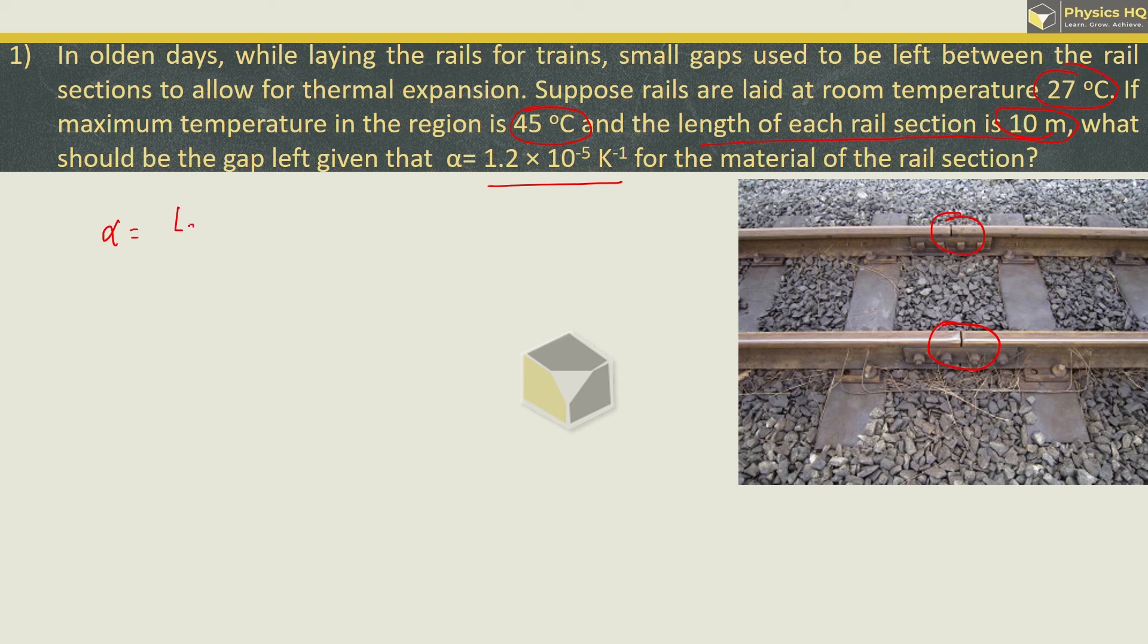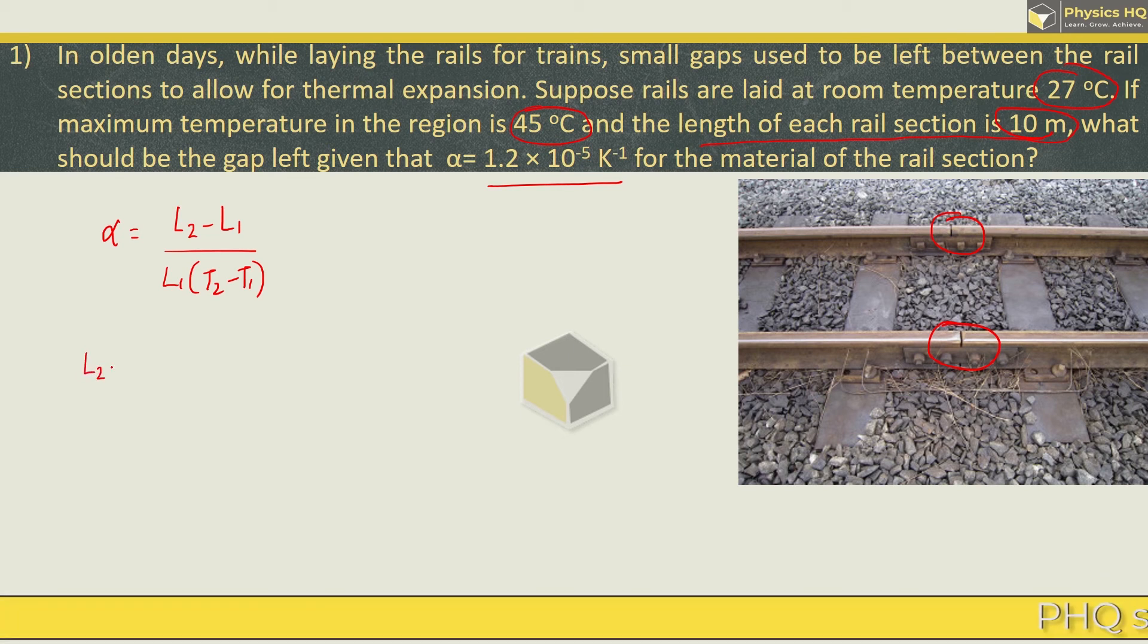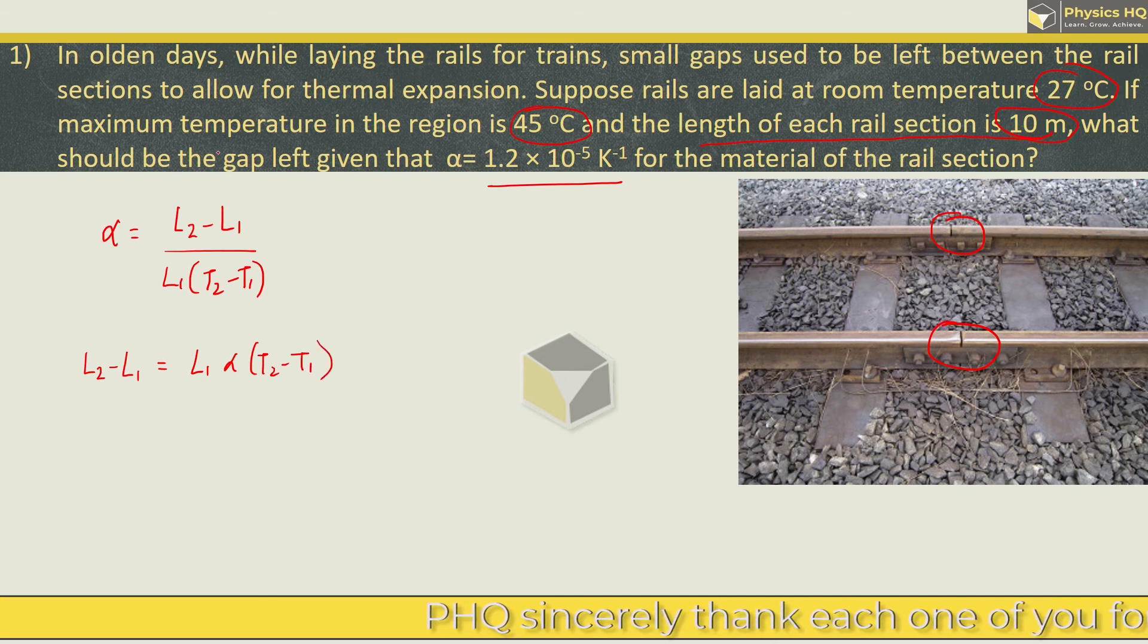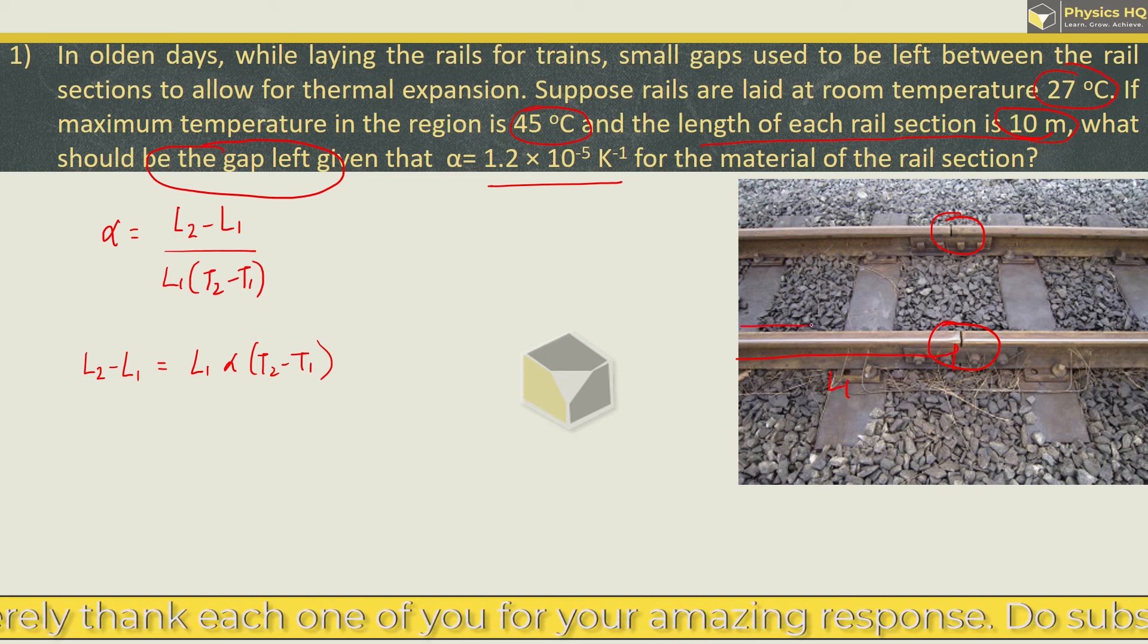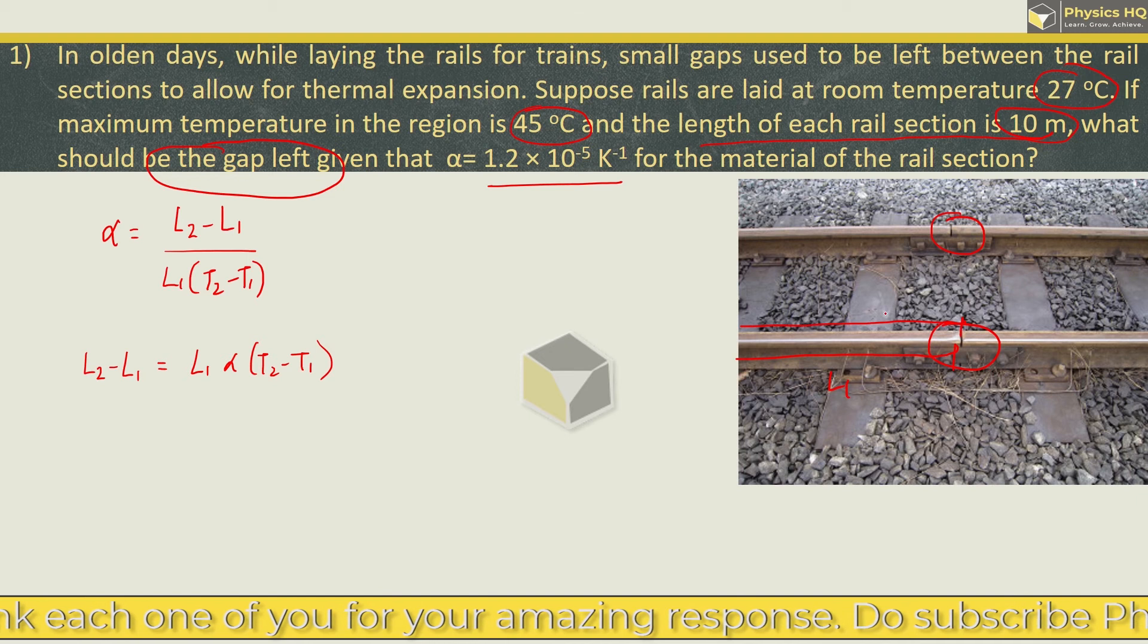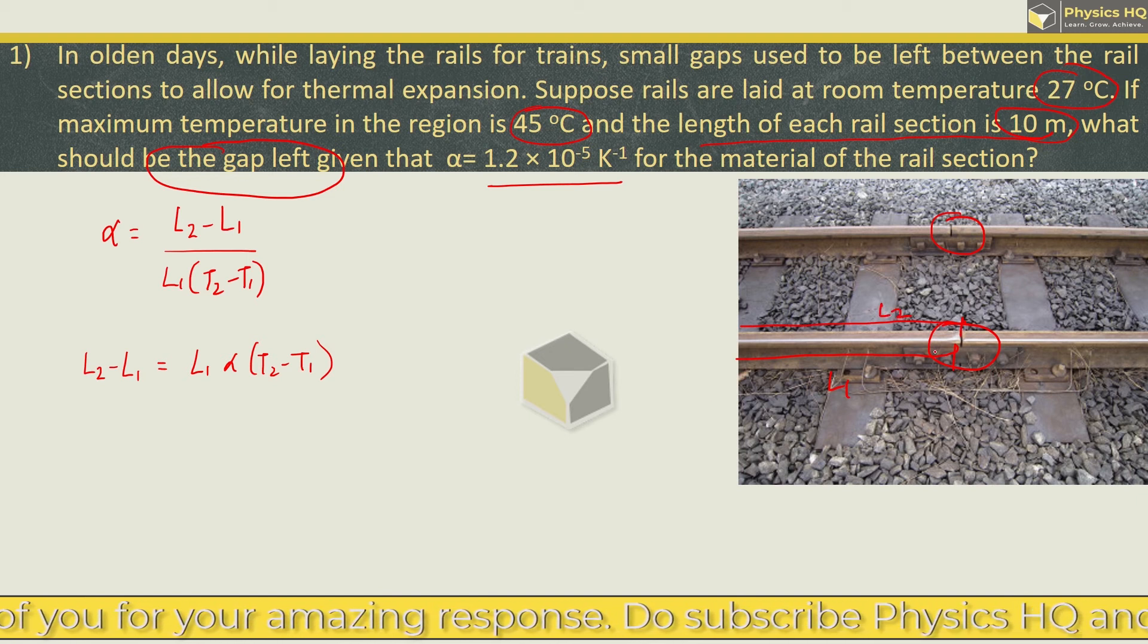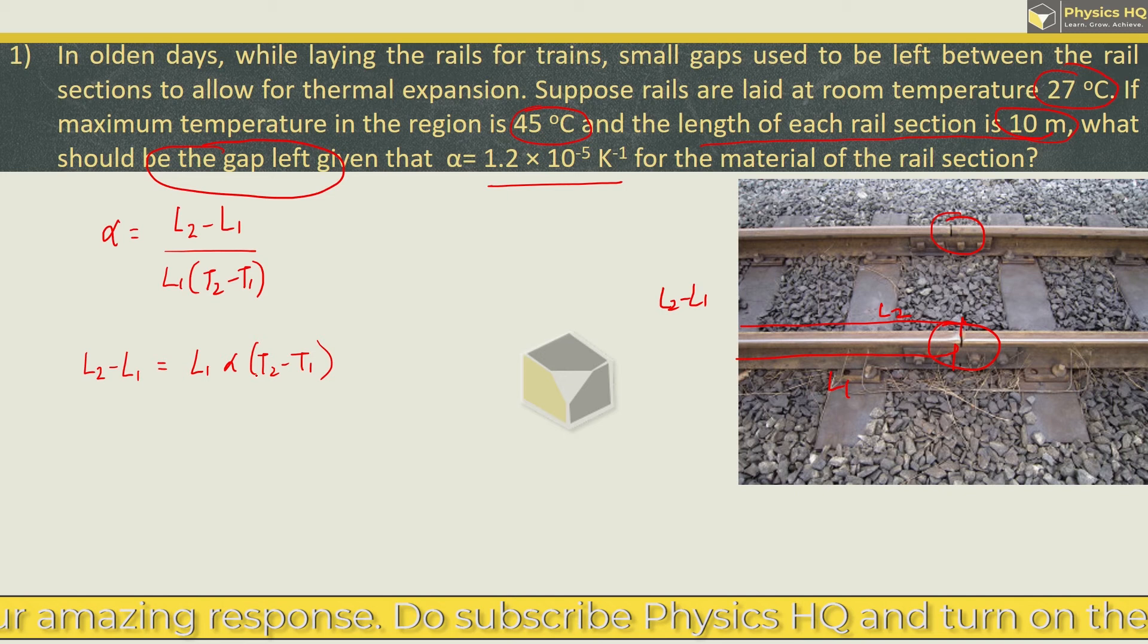So we have to write the formula here. It is alpha equals L2 minus L1 upon L1 times T2 minus T1. L1 is the initial length, L2 is the final length, and T1 and T2 are respective temperatures. Over here, we are supposed to find out what is L2 minus L1. So this will be L1 into alpha times T2 minus T1. Because here, we are asked what should be the gap left. Initially, this length is L1 and after expansion, this gap will fill the gap. So that will be the length L2. So this gap is nothing but L2 minus L1.